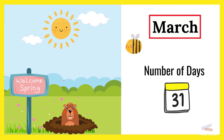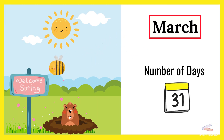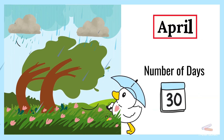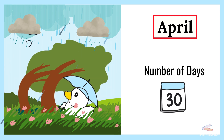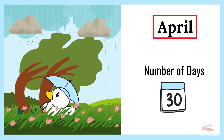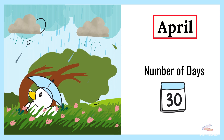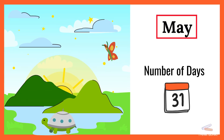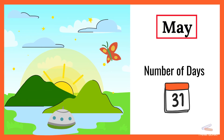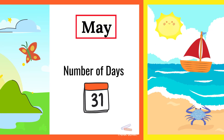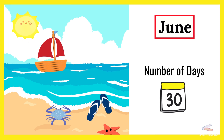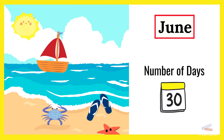March. March has 31 days. April. April has 30 days. May. May has 31 days. June. June has 30 days.